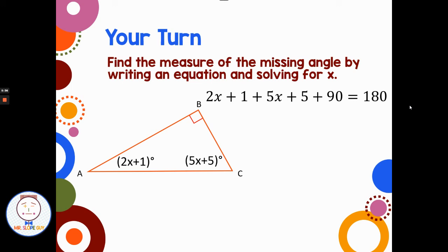Then I could start combining some like terms. 2x and 5x combined to be 7x. 1 plus 5 plus 90 is 96. So 7x plus 96 equals 180. Subtract 96 from each side, divide by 7, and x is equal to 12. So if x equals 12, I can use that fact to solve for the size of those angles inside the triangle.